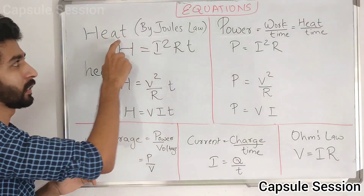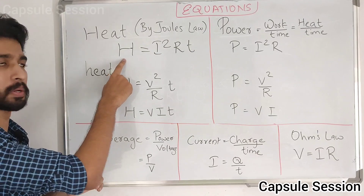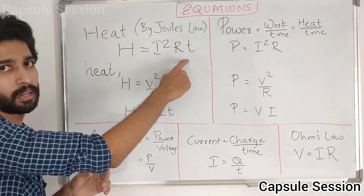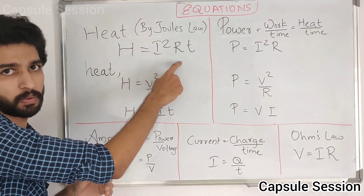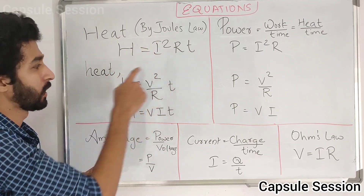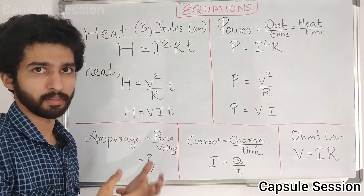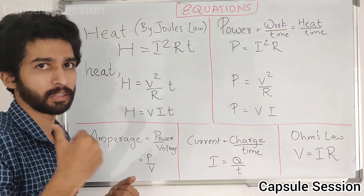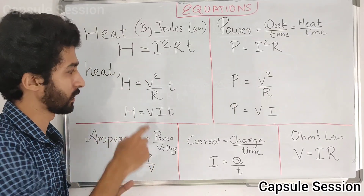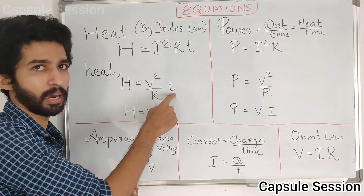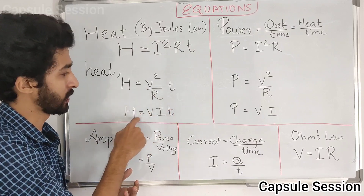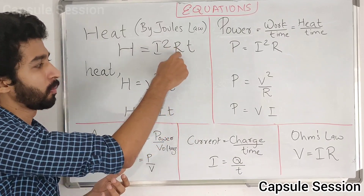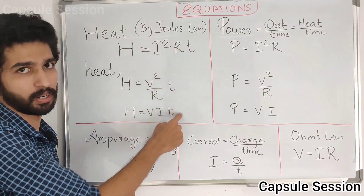One thing we learned about heat in the equation is that heat is equal to i squared R times T. We also learned two equations in the video, and we learned three equations in heat overall.